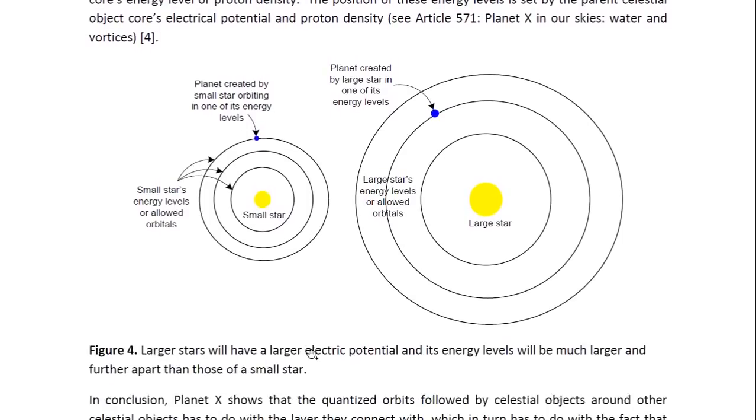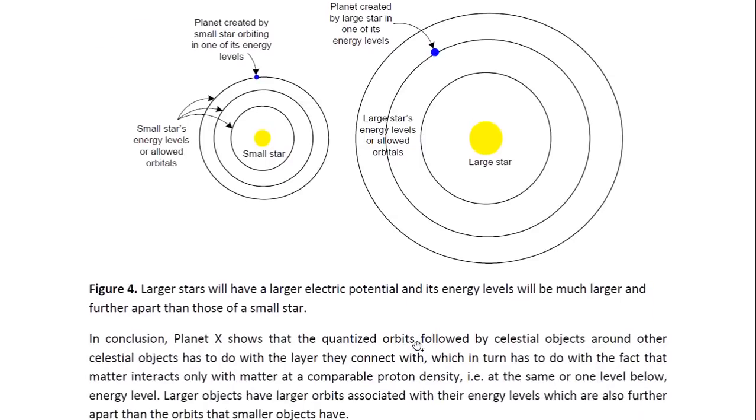This illustrates how larger stars will have a larger electric potential and its energy levels will be much larger and further apart than those of a small star. Here we have a small star and we see its allowed energy levels in which one of the planets that it creates will go into orbit along. A larger star will have energy levels that are further apart, that are much larger, and one of its planets which it ejects will go into orbit along one of these orbits.